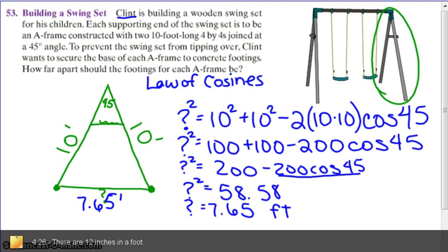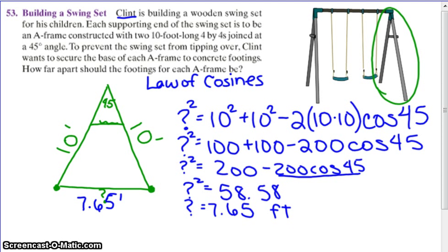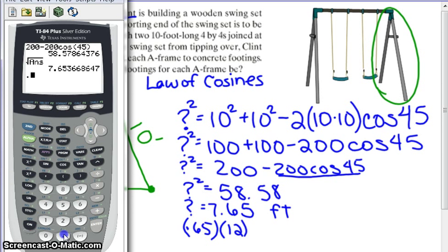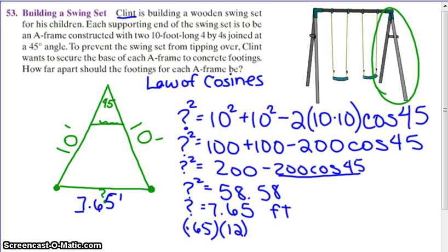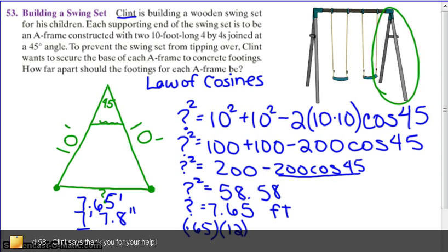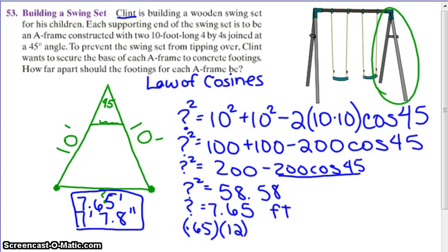By taking that 0.65, if you take that 0.65 and say, okay, that's feet, multiply it by 12 inches per foot, and you can actually tell Clint how many feet and inches he needs to separate those two footings by. Okay, 7.8 inches, so 7 feet 7.8 inches. There's your final answer. Either of those would work. Now, kids can have fun on the swing set.